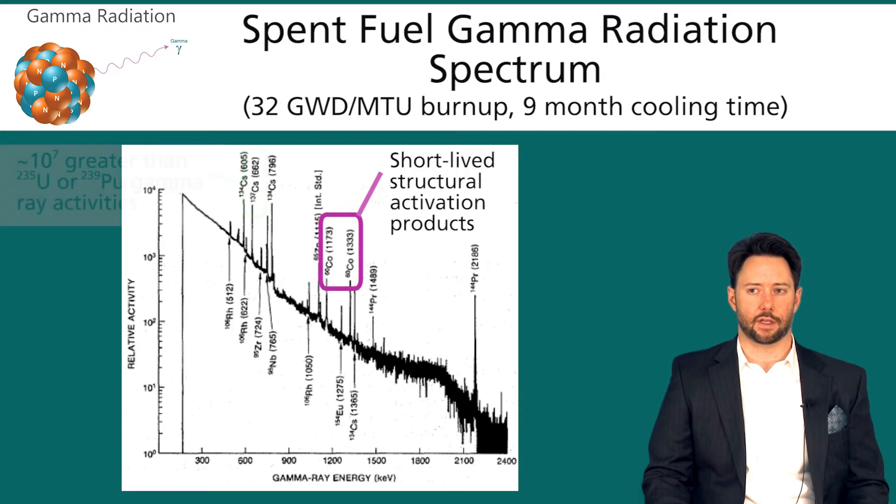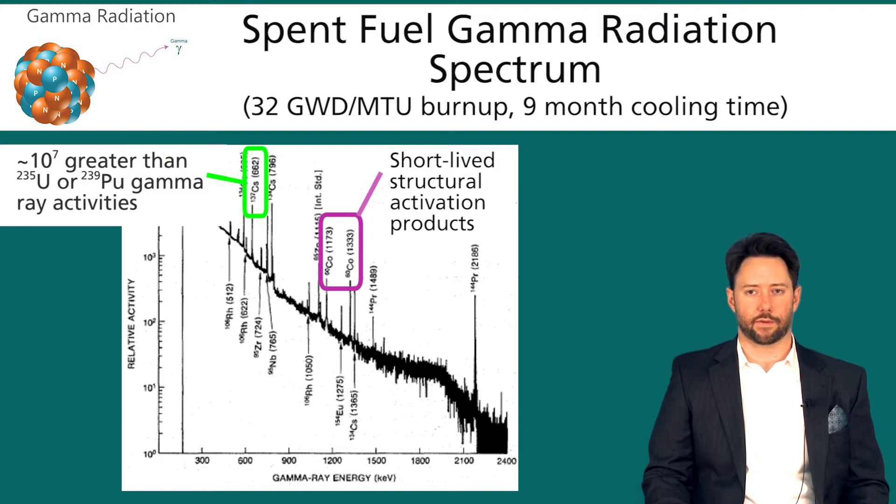Let's focus on the cesium-137 gamma ray here. We will note that the cesium-137 gamma ray activity is about 10 to the 7 times greater than U-235 or plutonium-239 gamma ray activities.